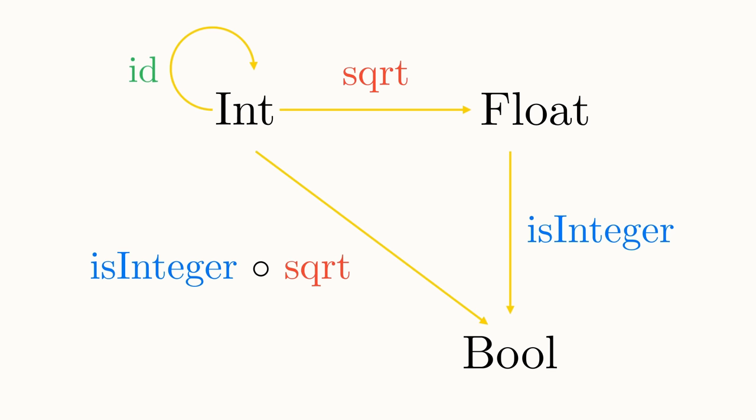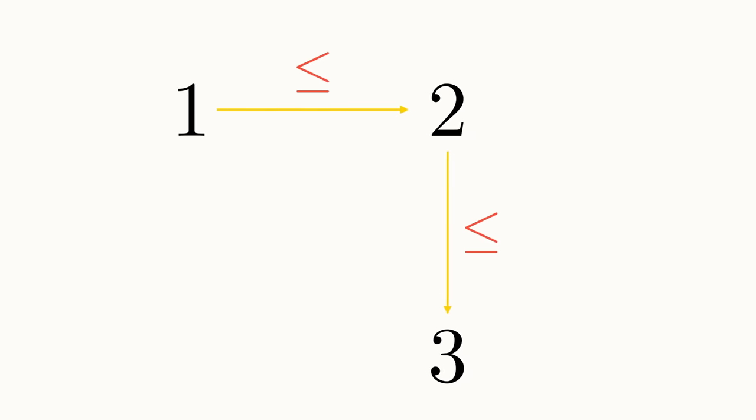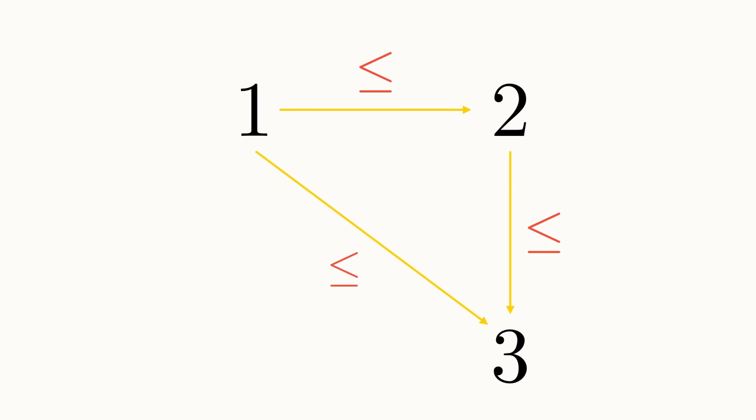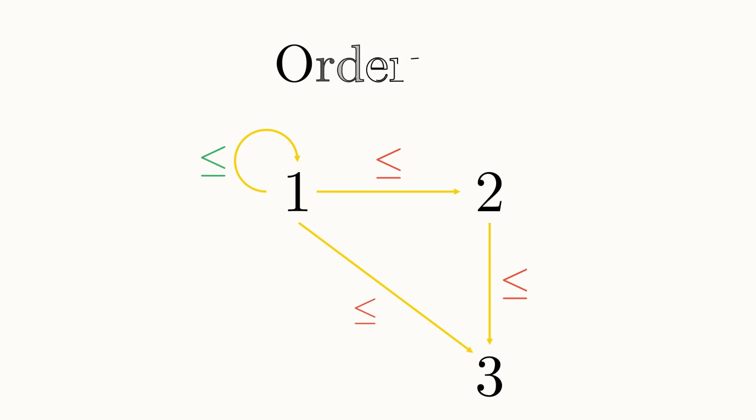Perhaps less intuitively, let our objects be integers and an arrow between two integers indicate that the first integer is less than or equal to the second. Composition can be thought of as being the fact that knowing one is less than two and two is less than three allows us to concretely say that one must be less than three. So we can draw an arrow between them. Identity arrows exist simply because of the fact that every number is less than or equal to itself. Then we have constructed a category based on the ordering of integers.